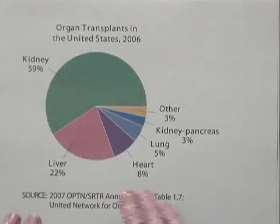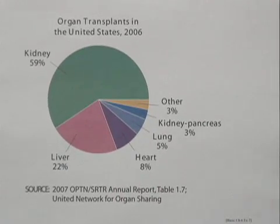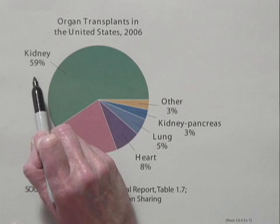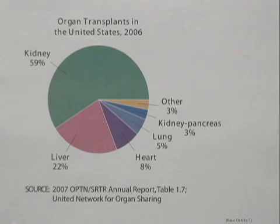Let's take a look at the pie chart. This shows us the organ transplants in the United States in 2006. We're interested in kidney transplants. We see that 59% of transplants were kidney transplants. We're also interested in liver transplants. We see that they accounted for 22% of transplants.